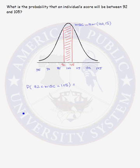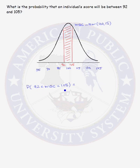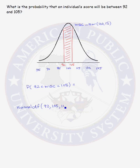The last probability calculation we want to do is: what is the probability that an individual score will be between 92 and 105? The probability is represented by the area under the curve between a WISC score of 92 and 105. Our probability statement is the probability that the WISC score is between 92 and 105. On the calculator, we use normalCDF with a lower bound of 92, an upper bound of 105, mean of 100, and standard deviation of 15.